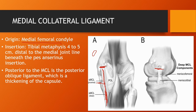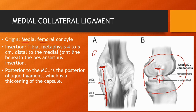If we peel away the superficial medial collateral ligament, we get a look at the deep medial collateral ligament. The deep medial collateral ligament is interesting because it attaches on the medial meniscus. The superior portion is referred to as the meniscofemoral portion; the inferior portion is the meniscotibial portion. There is strong adherence and confluence of the medial collateral ligament with the medial meniscus, which explains why injury to the MCL often causes simultaneous injury to the medial meniscus through avulsion and tearing.